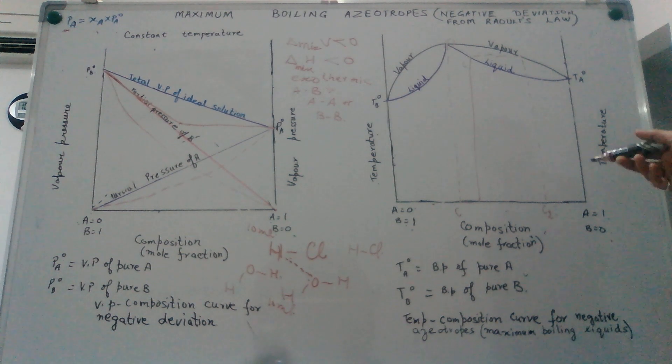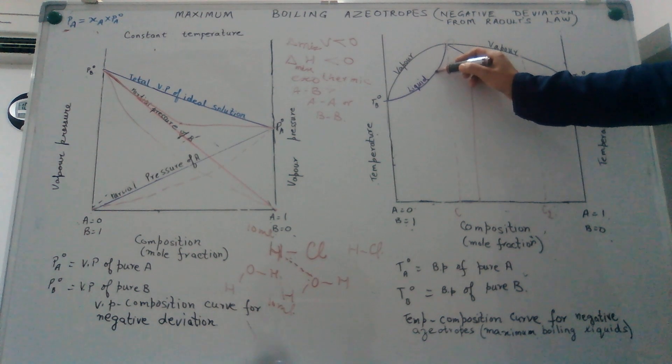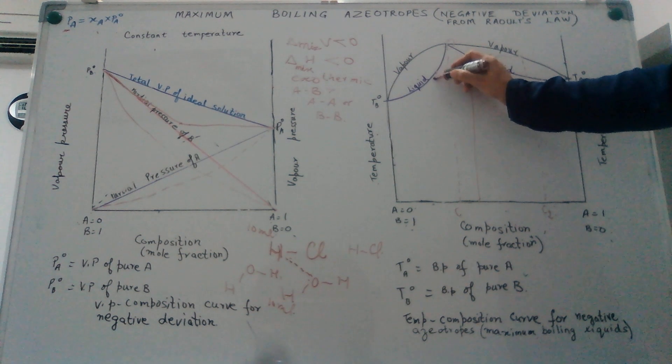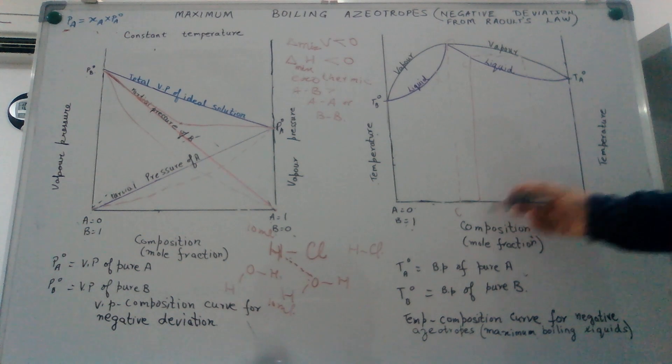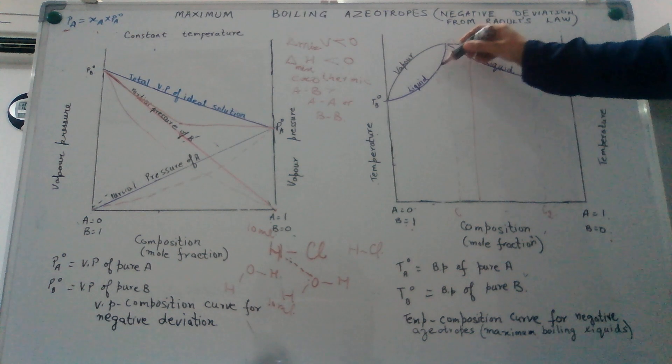Hence, complete separation of such an azeotropic mixture by fractional distillation is not possible. We can see from the other side of the curve as well. Supposing we start with a liquid mixture having composition X wherein the amount of B is much more than the amount of A.